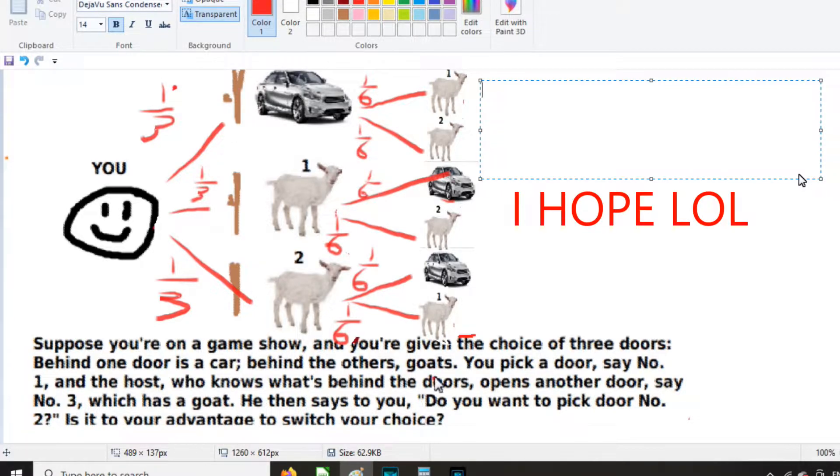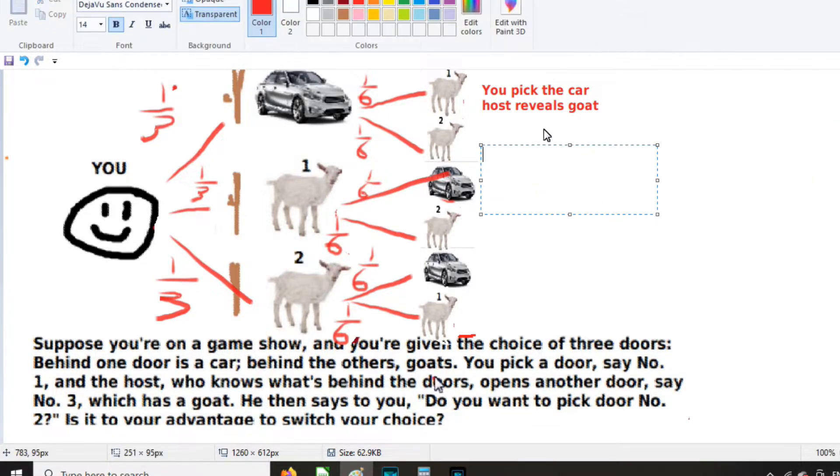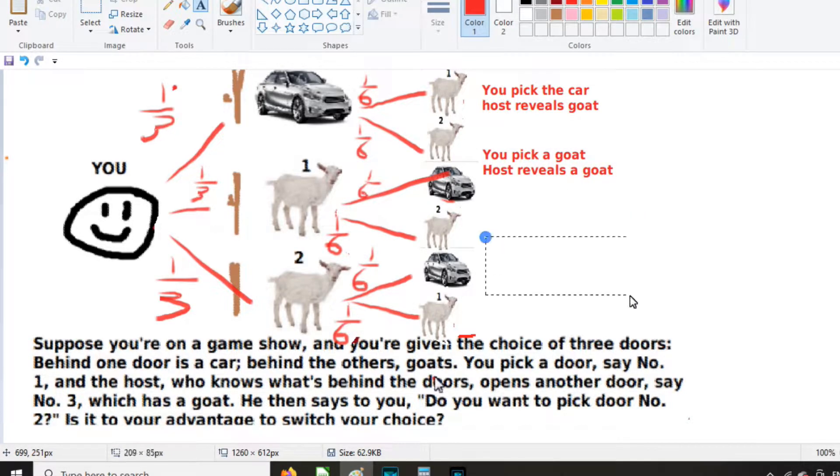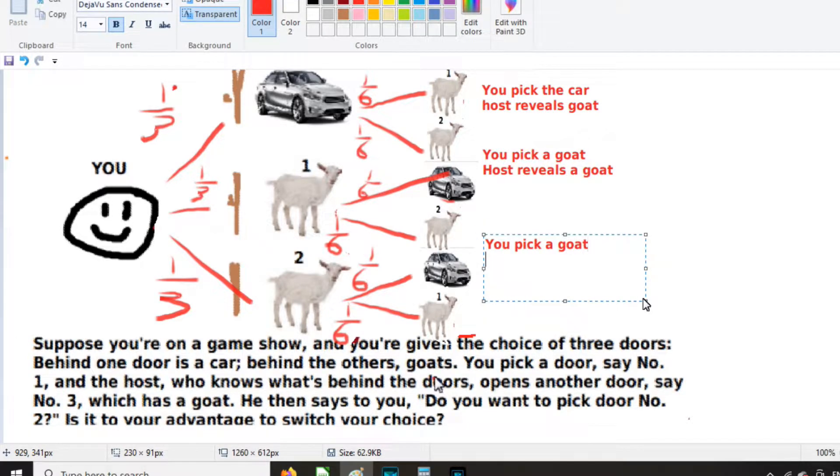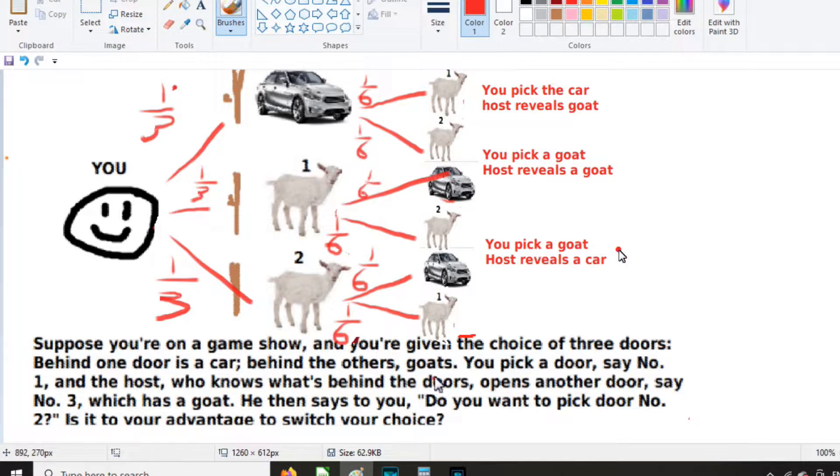Now there's three scenarios that can happen. The first one is you pick the car, host reveals goat. You pick the car and the host reveals a car is not a possible scenario. That's not something that can happen on our tree. The next is you pick a goat and host reveals a goat. And the last scenario is you pick goat, host reveals a car. This one we're not concerned with because the host has revealed a goat. So only these two scenarios are relevant to what we're dealing with.